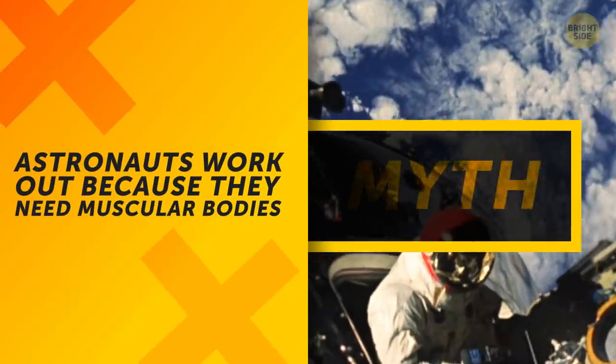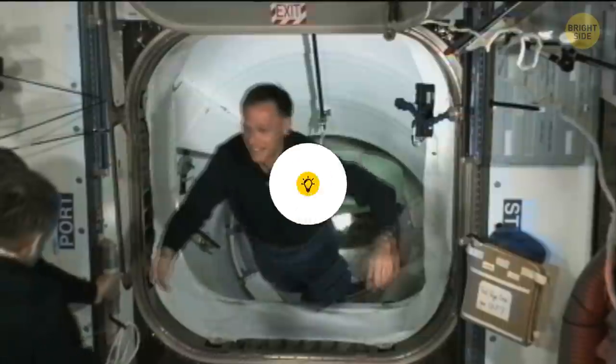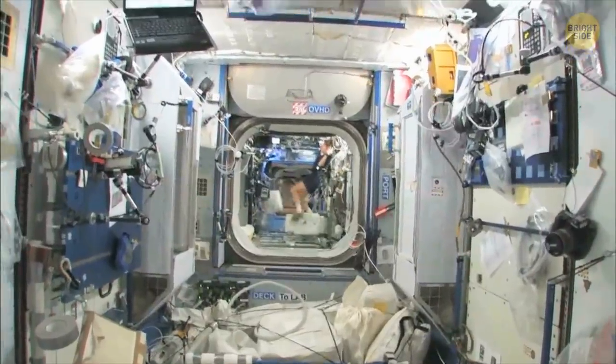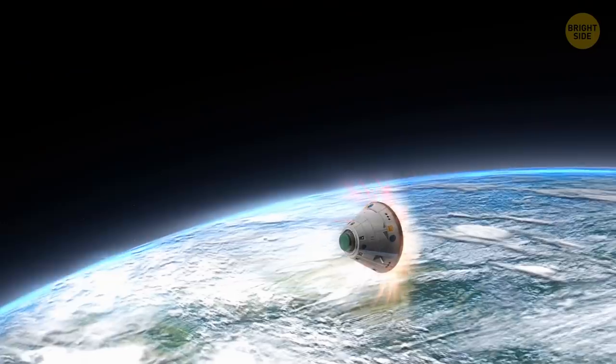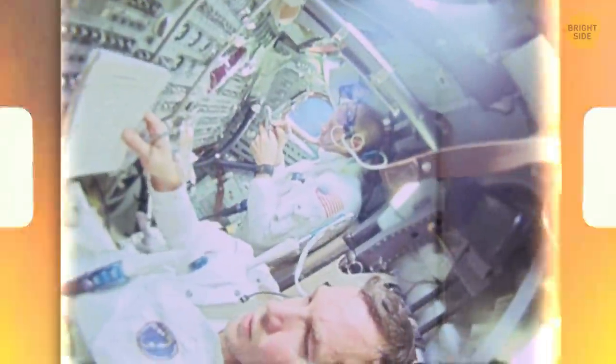Astronauts work out on orbit because they need muscular bodies to work in space. The gravity on orbit doesn't affect your body, and it doesn't work as much. Astronauts work out because they need to be ready to return back to Earth and its gravity without feeling like they're about to get squished.